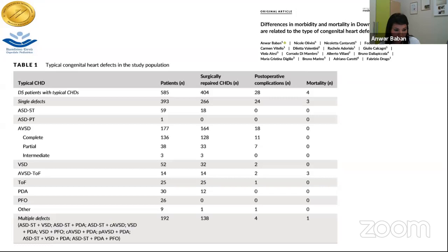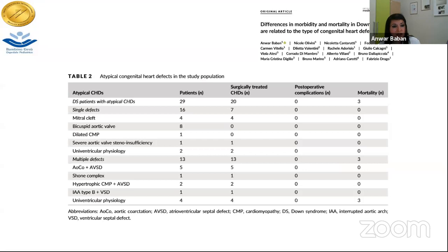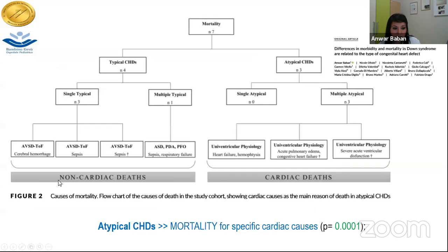We then analyzed what is often considered less important in Down syndrome: the atypical congenital heart defects. Analyzing patients with univentricular physiology in terms of survival, we identified that mortality in Down syndrome patients with typical congenital heart defects is mainly non-cardiac — caused by cerebral hemorrhage or infections — while in those with atypical defects and univentricular physiology, the main cause of death is cardiac.